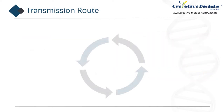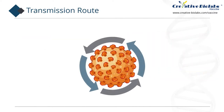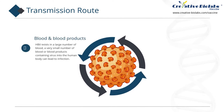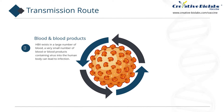The main transmission routes of HBV include the following four. First, dissemination of blood, blood products, etc. HBV exists in large numbers in blood; a very small amount of blood or blood products containing virus entering the human body can lead to infection. In addition to blood transfusion, hemodialysis, organ transplantation, and so on can also transmit the virus.